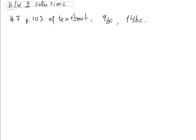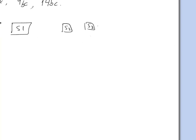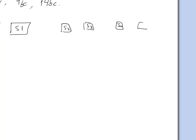Let's begin with problem 7 of the text, problem 7 on page 103 of the textbook. So we have a plane — this is a plane here — and it goes through different stations, and each of the stations has to shoot the plane. Let's put the stations here.